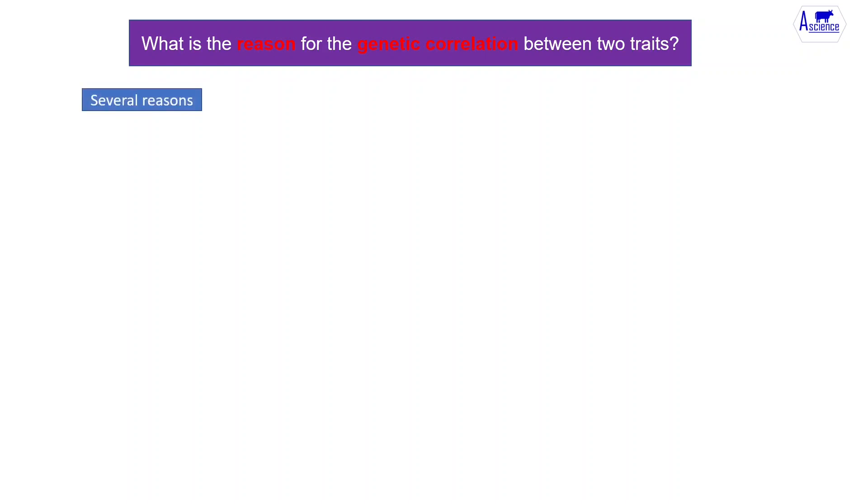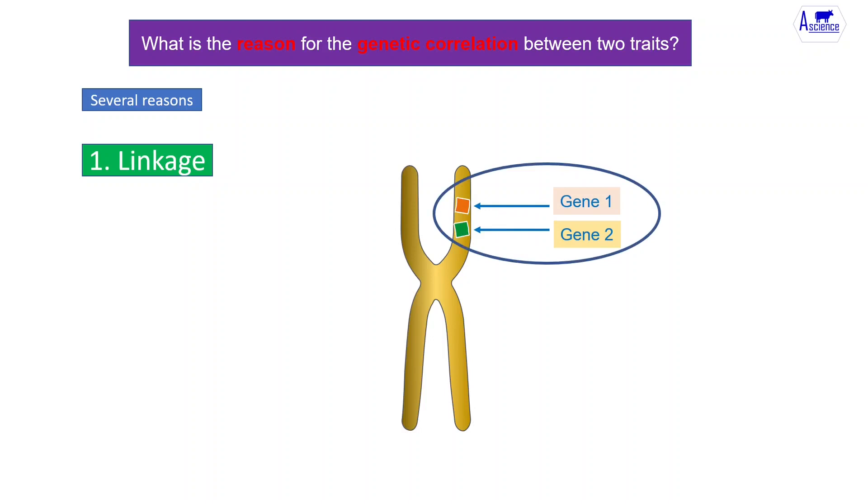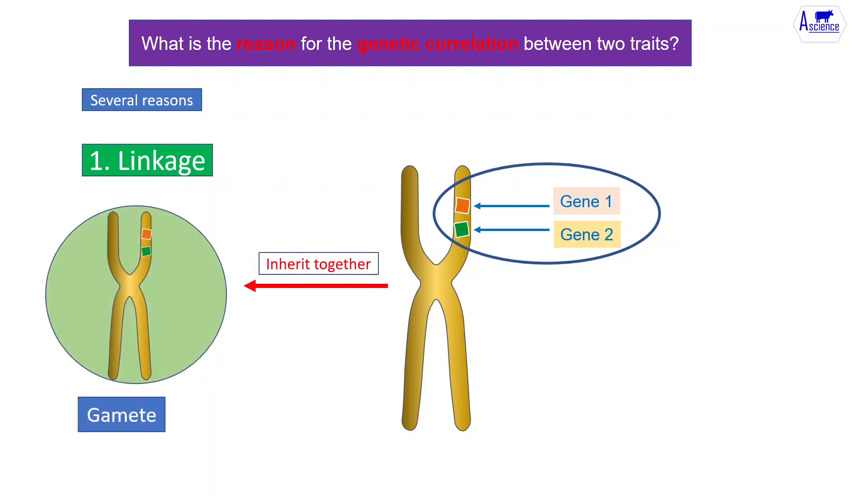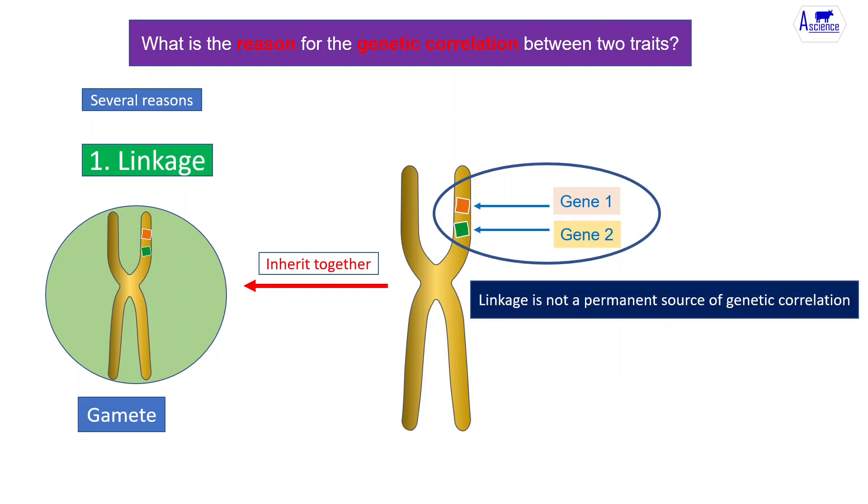Genetic correlation between traits exists due to several reasons. One reason is linkage, which means genes that are involved in correlated traits are located close to each other on the same chromosome. So they often inherit together. However, linkage is not a permanent source of genetic correlation because sooner or later recombination will break the linkage between these genes.